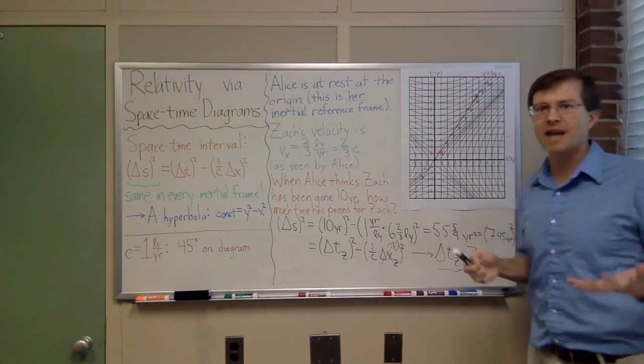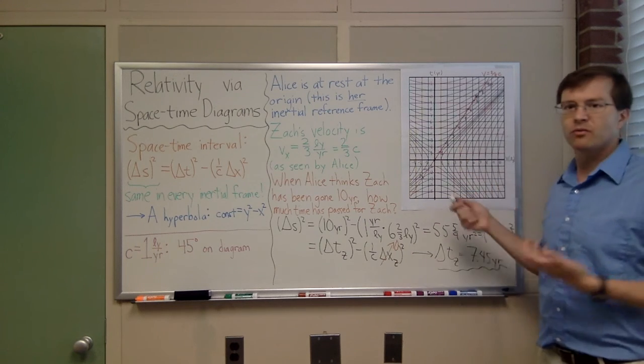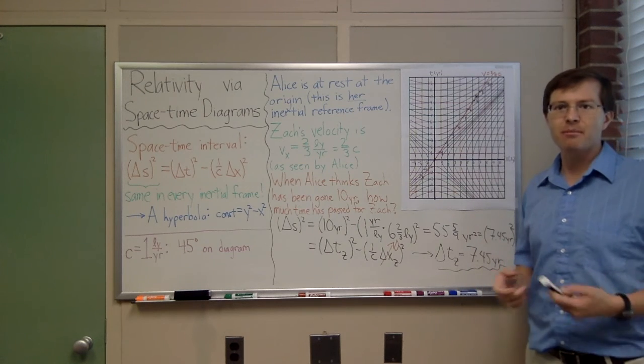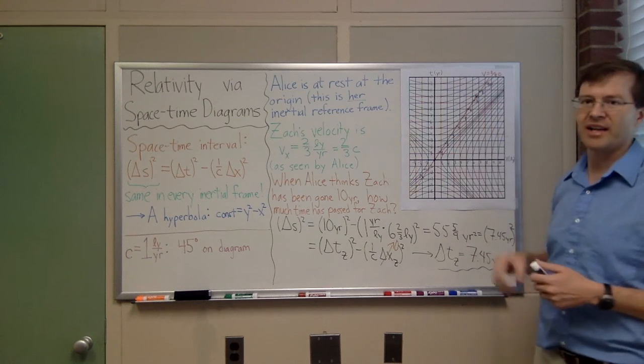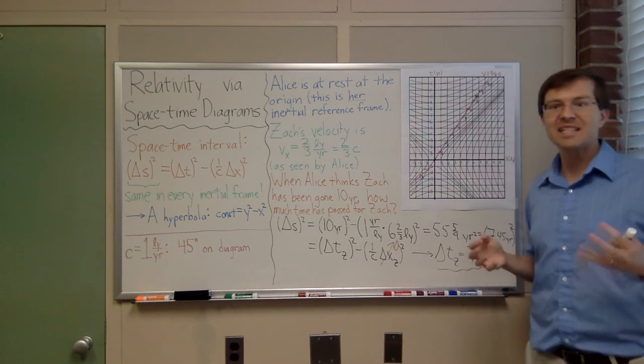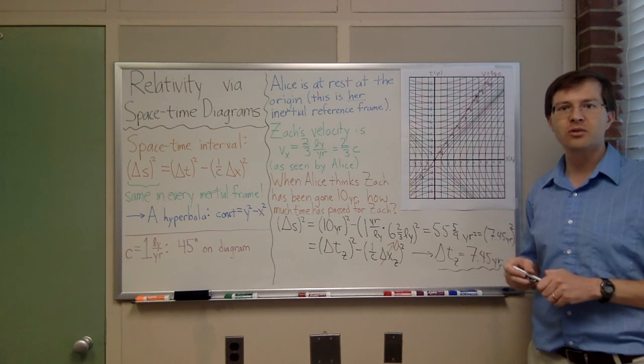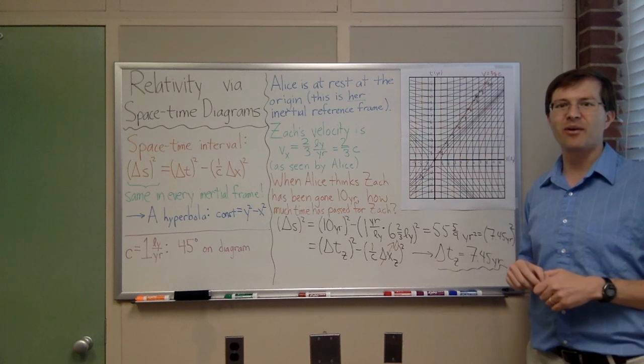And I love it because I don't need to do anything too mathy to get results about relativity that say, hey, Zach believes that less time has passed than Alice believes between those same two events. That's a cool result. That's a neat thing about relativity, and we can get it straight from the picture. I hope that you appreciate that too, and we'll do more examples of different types of calculations with this graph paper as we go on.